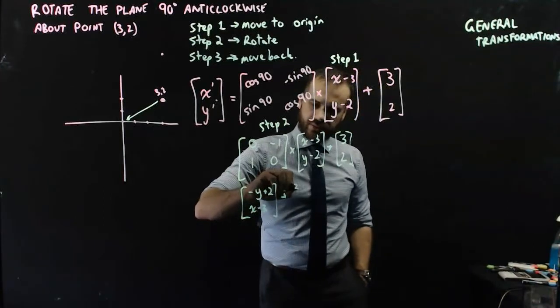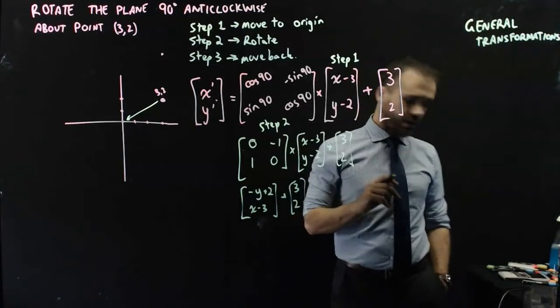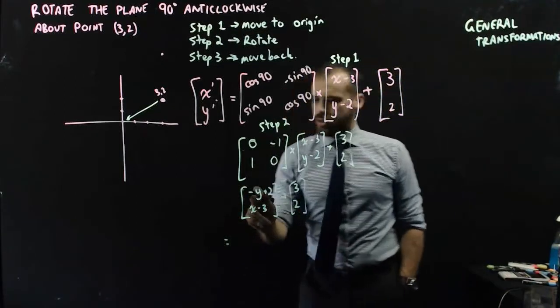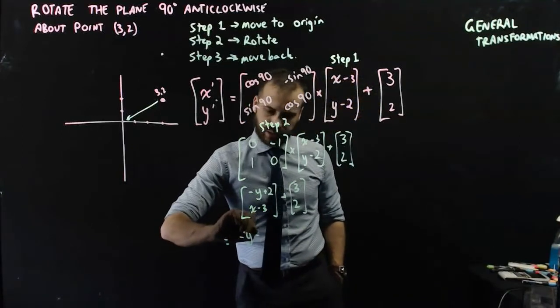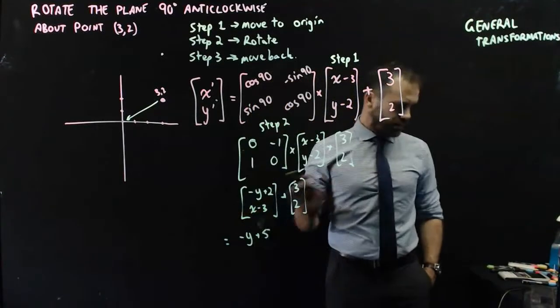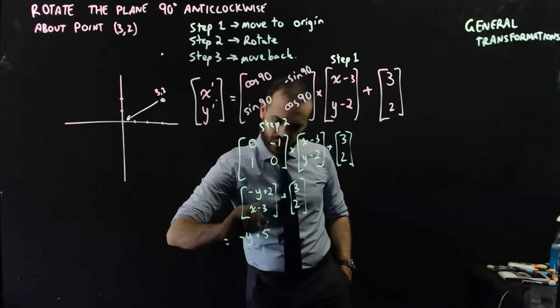And then I'm adding matrix 3, 2 on the end. And then negative y plus 2 plus 3, I get negative y plus 5. And x minus 3 plus 2, I get x minus 1.